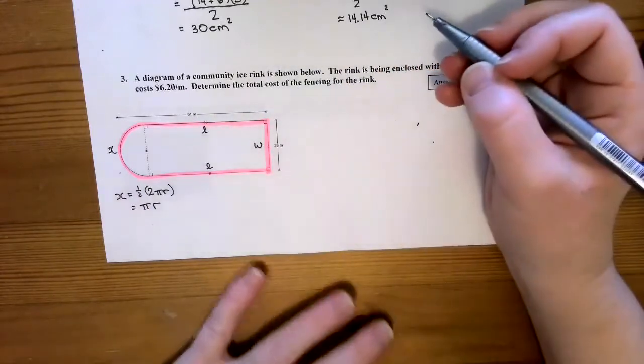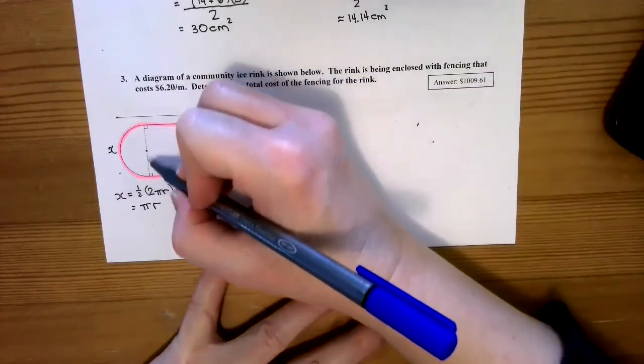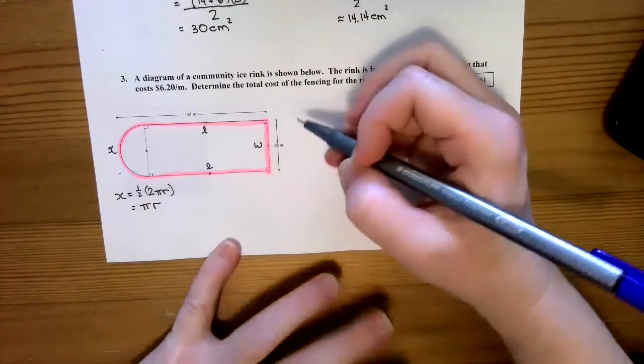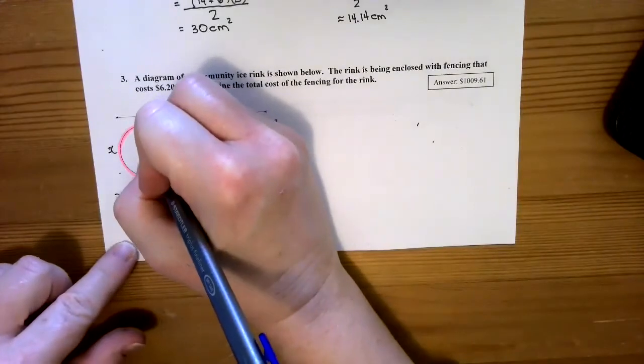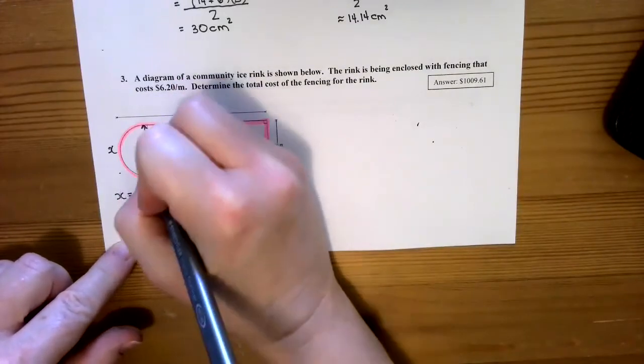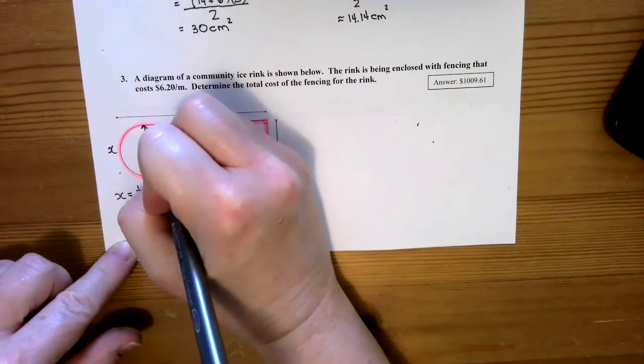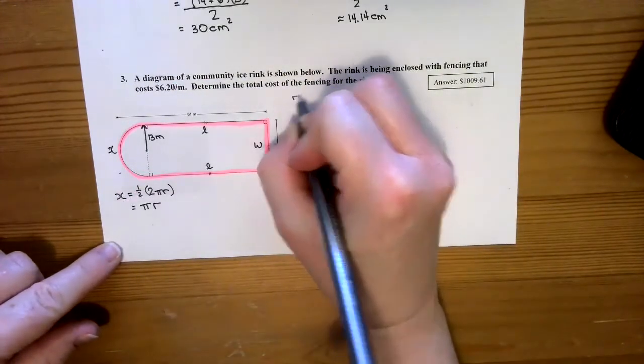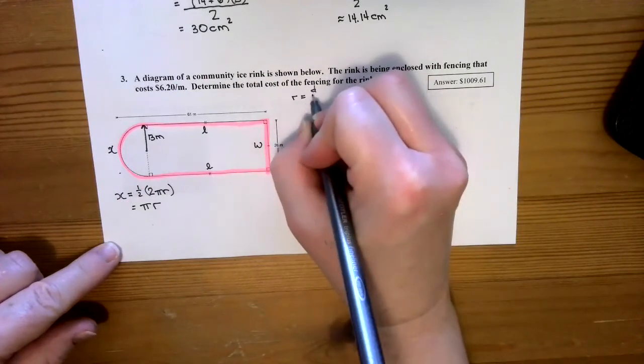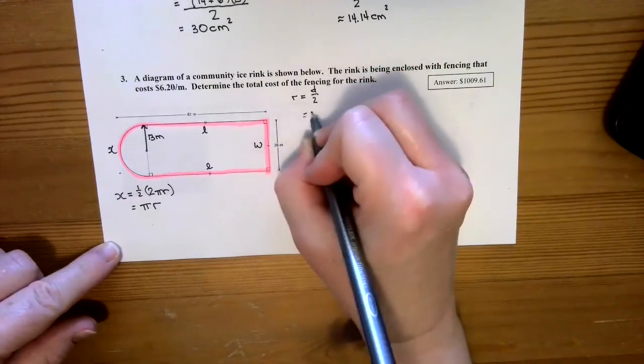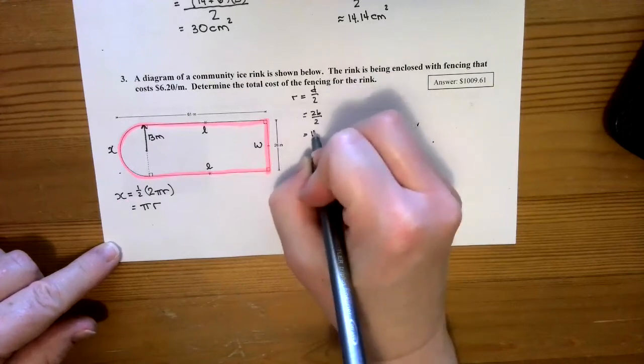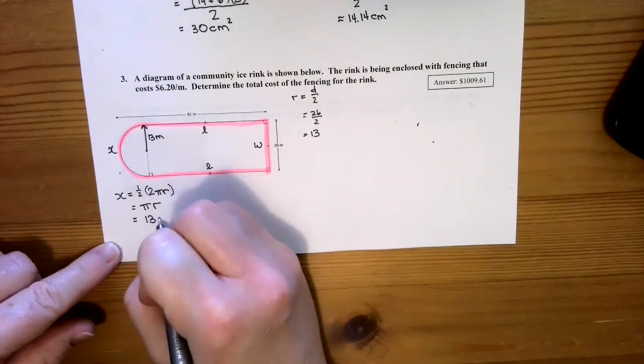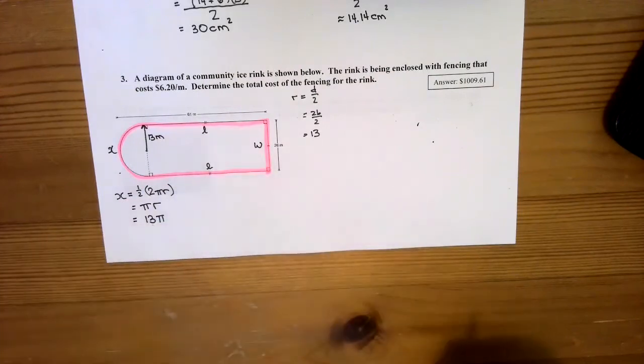What is the radius of the circle? Well, we know that the diameter—this side length is the same as this side length, and this side length is 26. So that means this is our radius, and that's going to be 13 meters. Our radius equals our diameter divided by 2, so 26 divided by 2, which is 13. I'm going to save that for now.